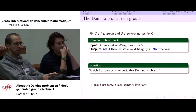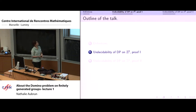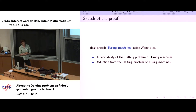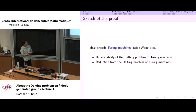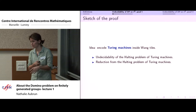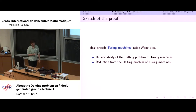We have defined our problem, and what I would like to do is present two proofs of the undecidability of this problem on Z². The first proof will use Turing machines. I will explain what they are on the next slide if you need some reminders. The sketch of the proof is the following: we know the halting problem of Turing machines is undecidable, and we will reduce from this problem to prove the undecidability of the domino problem.